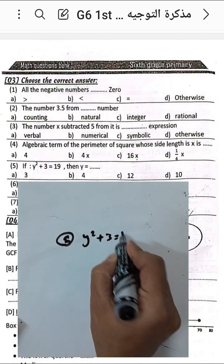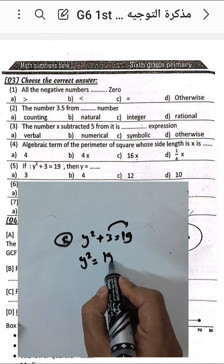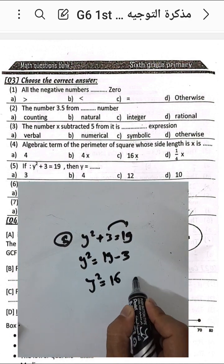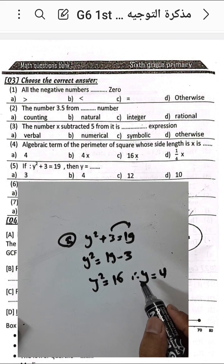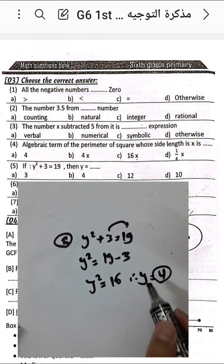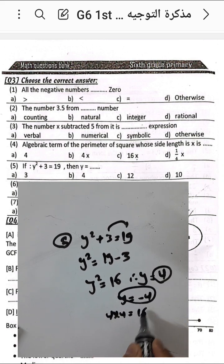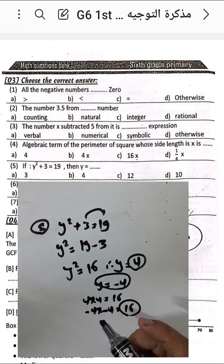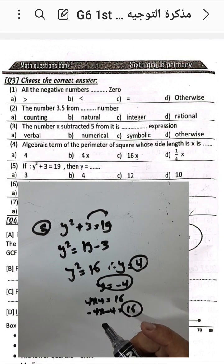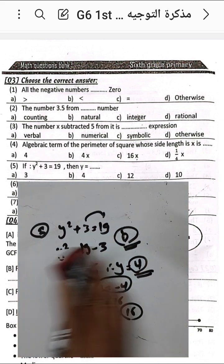Question number five: if y squared plus 3 equals 19, find the value of y. Move 3 to the right side: y squared equals 19 minus 3 equals 16. So y equals 4, because 4 times 4 equals 16. We could also have y equal negative 4, since negative four times negative four also equals 16, but here we choose 4.